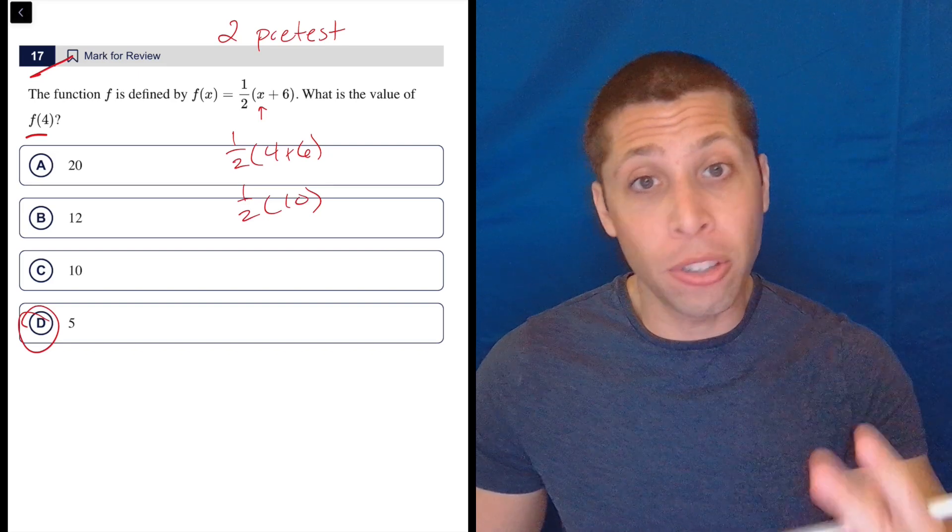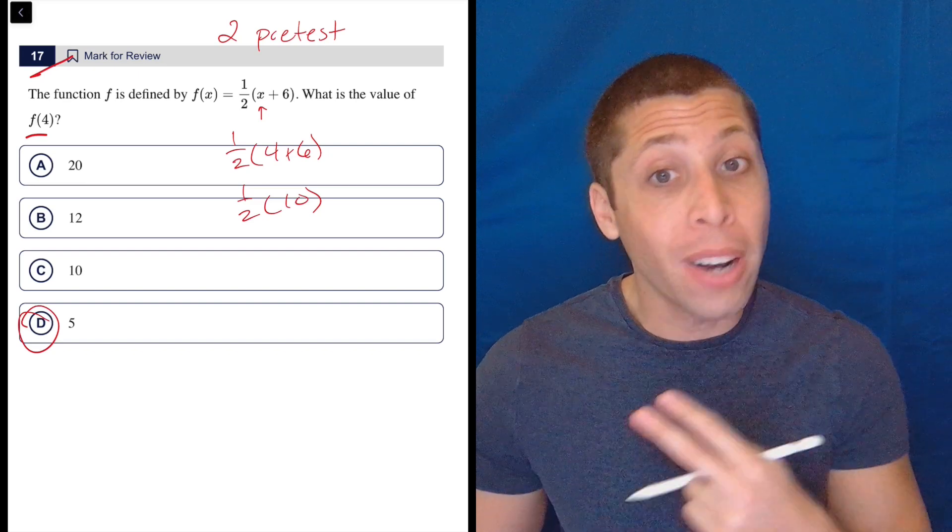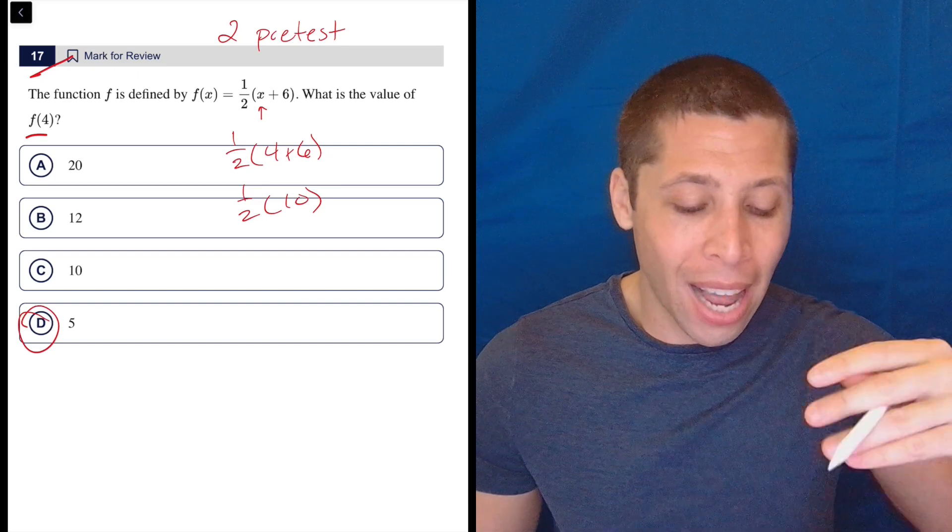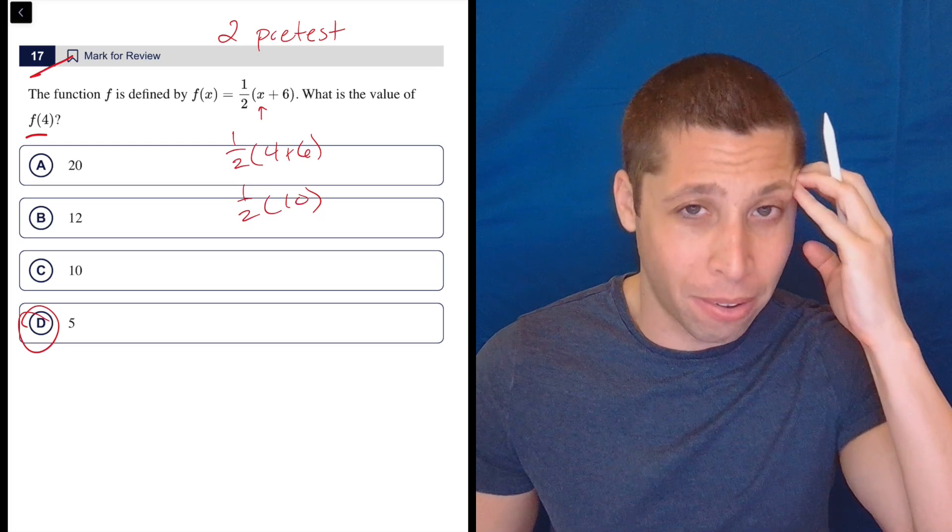And so there will always be two questions in your module that do not count, but they're not labeled. You don't know that. But because I know that those two questions exist, when I got to this, I was like, this has got to be one of the fake ones.